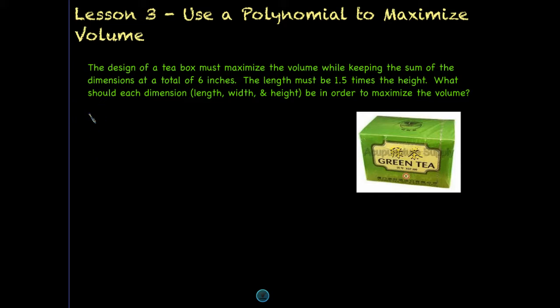The design of the box must maximize the volume, so we want the most volume possible on the inside, while keeping the sum of the dimensions at a total of six inches. So that means that the length plus the width plus the height can be no more than six inches, and that perhaps has to do with the factory, or distribution, or shelving.